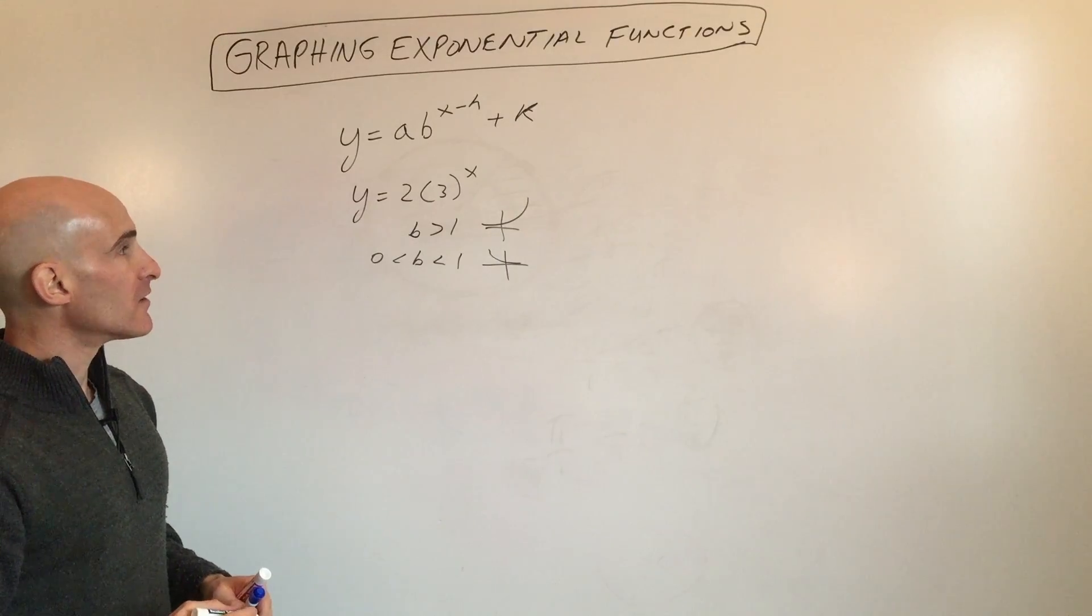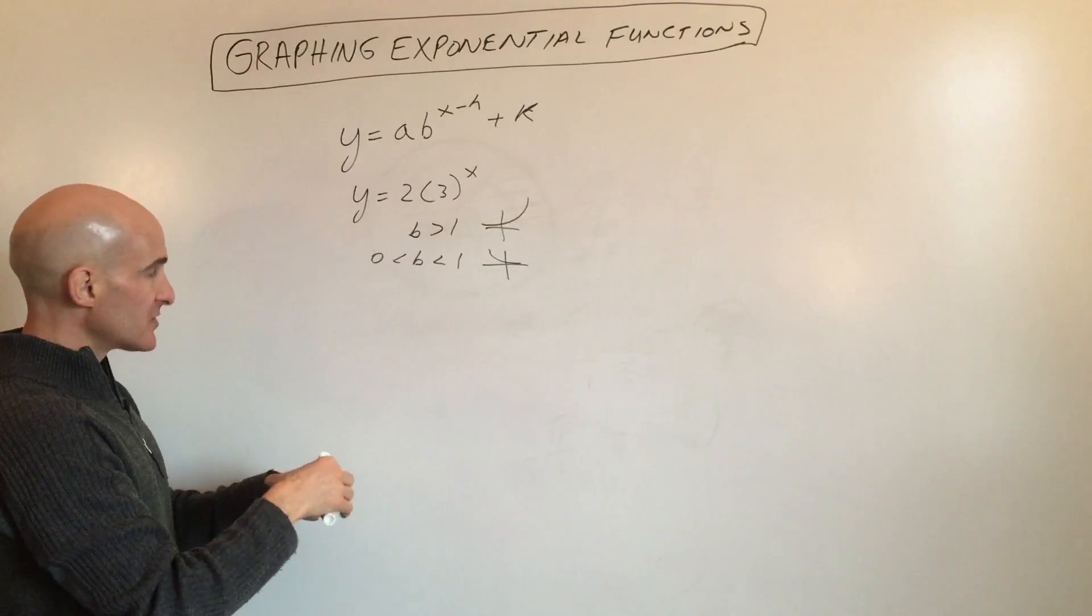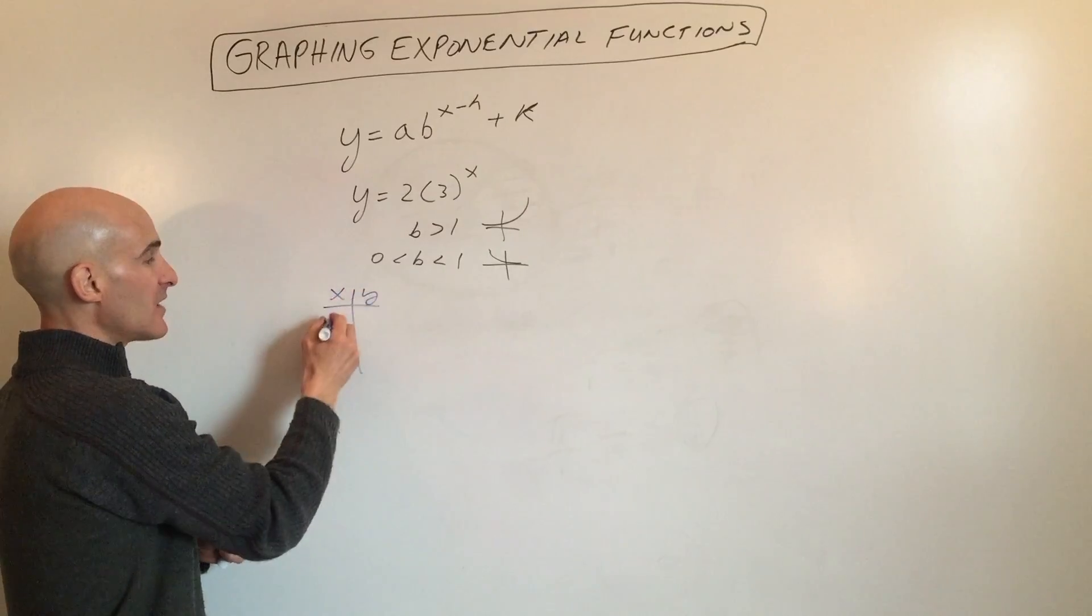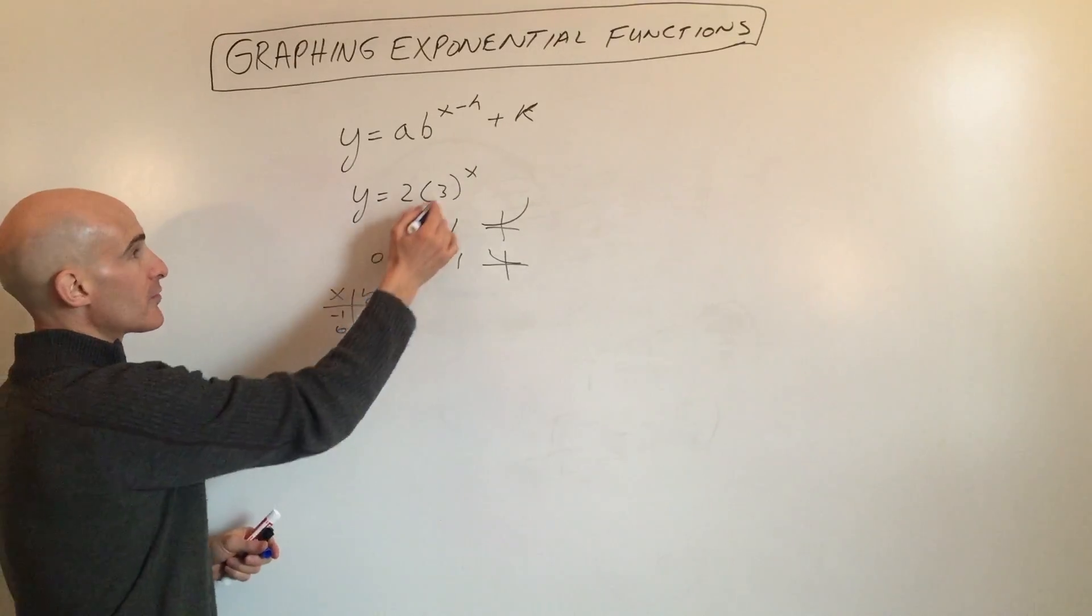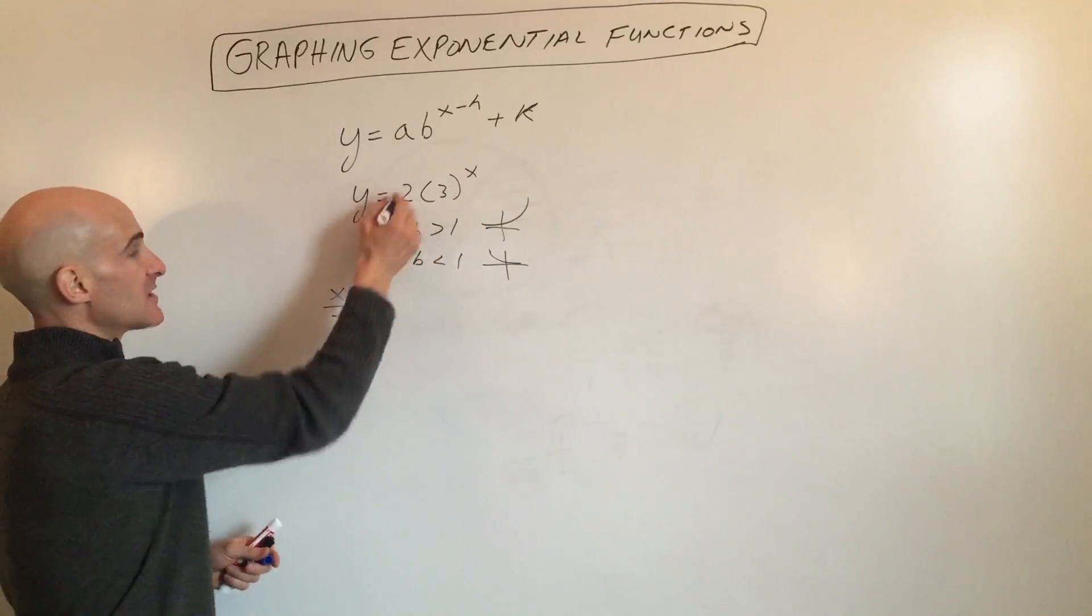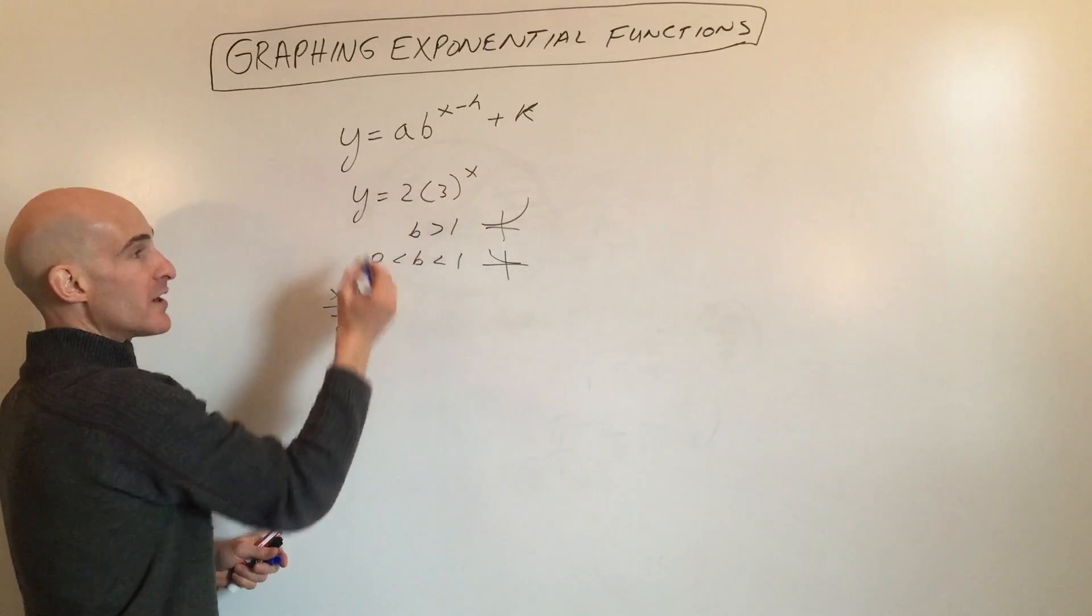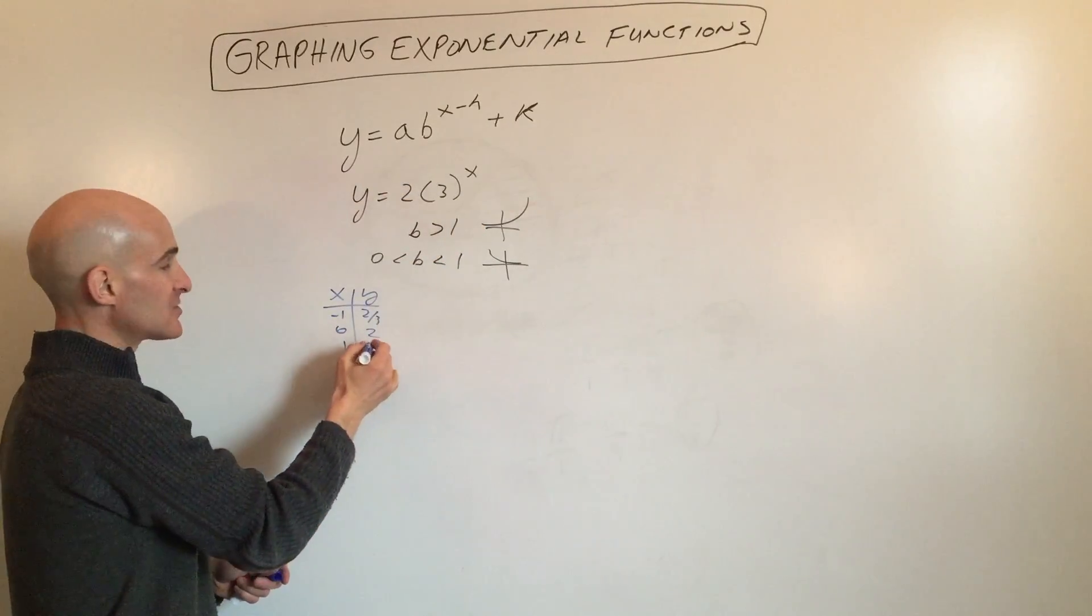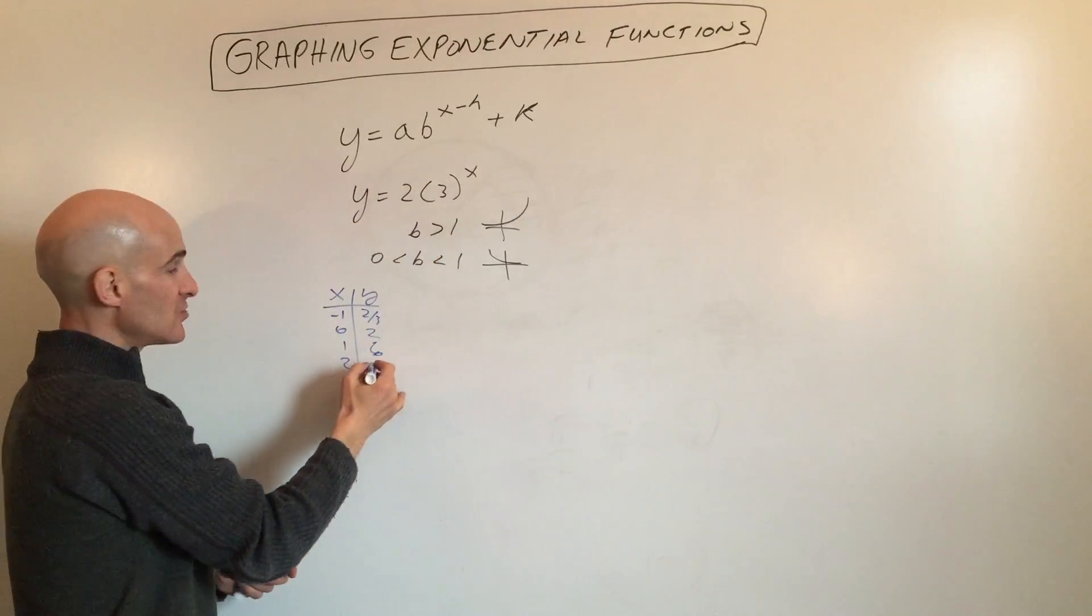Let's take a look at how to graph this one. We're going to make a table with x values: negative 1, 0, 1, and 2. 3 to the negative 1 is 1 third times 2 is 2 thirds. Anything to the 0 is 1 times 2 is 2. 3 to the first is 3 times 2 is 6. And 3 to the second is 9 times 2 is 18.